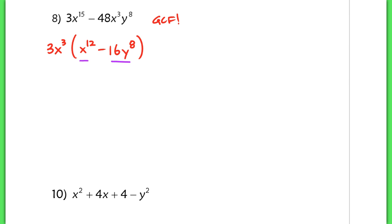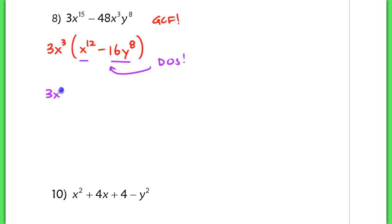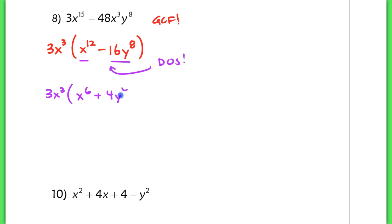So this factors as a difference of squares, and I'm going to factor that a little bit more. I keep that 3x cubed out in front, then I have x to the 6th plus 4y to the 4th, and x to the 6th minus 4y to the 4th.